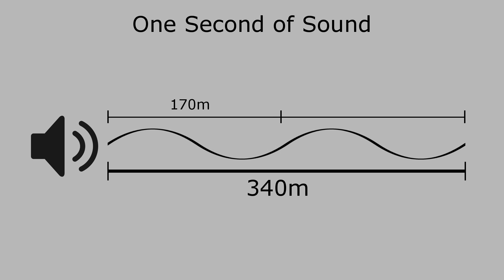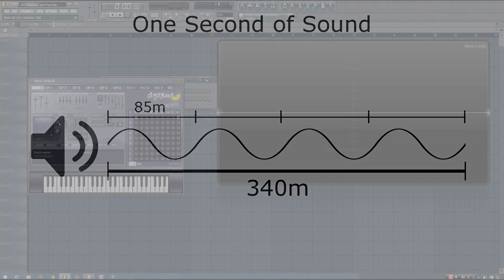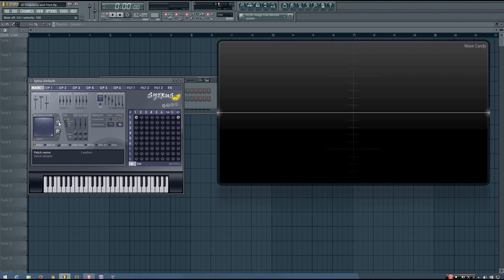If the speed of sound were exactly 340 meters per second, a sine wave with a wavelength of 170 meters would complete 2 full cycles in a second, and would therefore have a frequency of 2 hertz. A sine wave with a wavelength of 85 meters would complete 4 cycles and have a frequency of 4 hertz. You can see that wavelength and frequency are inversely related — shorter wavelengths result in higher frequencies, and longer wavelengths result in lower frequencies.